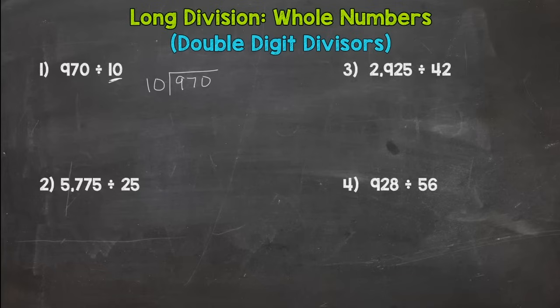We start with 9 divided by 10. How many whole groups of 10 can I pull out of 9? Well I can't do it so I need to look at the 97. How many 10s, how many groups of 10 are in 97? Well 9, right? How many whole groups? 9 is the closest. 9 times 10 is 90. Subtract, I get 7, bring down a 0.